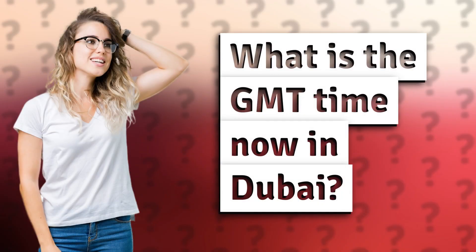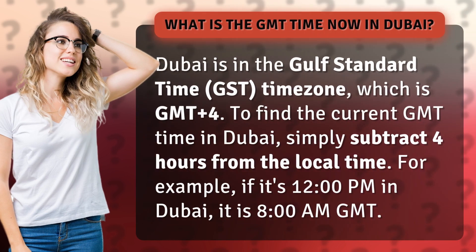What is the GMT time now in Dubai? Dubai is in the Gulf Standard Time (GST) time zone, which is GMT plus four. To find the current GMT time in Dubai, simply subtract four hours from the local time. For example, if it's 12 PM in Dubai, it is 8 AM Greenwich Mean Time.